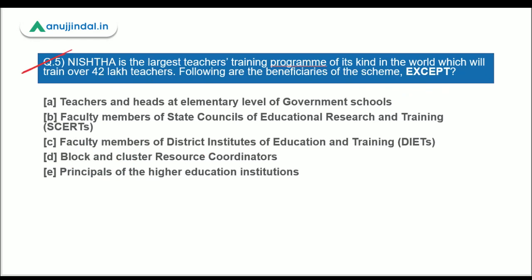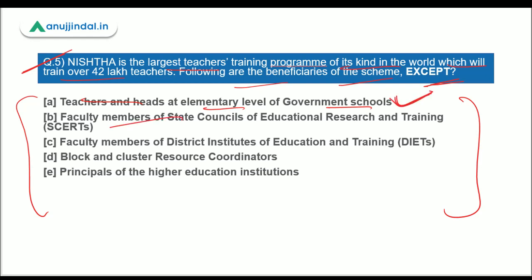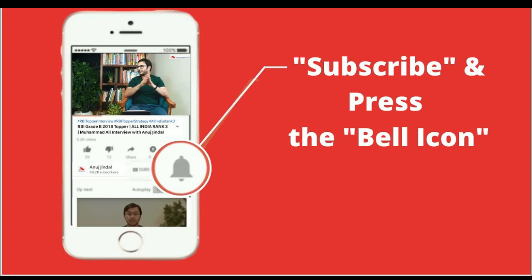Question 5: NISHTHA is the largest teacher training program of its kind in the world, which will train over 42 lakh teachers. Which of the following are NOT beneficiaries of the scheme? Teachers and heads at elementary level of government schools — yes; faculty members of SCERTs — yes; faculty members of DIETs — yes; block and cluster resource coordinators — yes. So the correct answer is option E — higher educational institutions are not covered. Thank you for watching. Please subscribe to the channel, press the bell icon, and consider our paid courses for RBI, SEBI, NABARD, and UGC NET. Goodbye and take care!